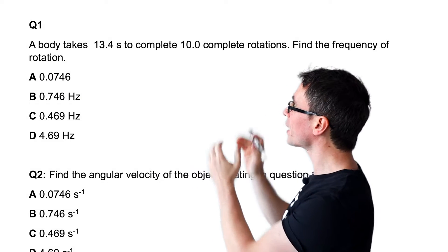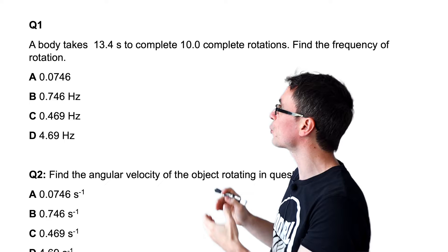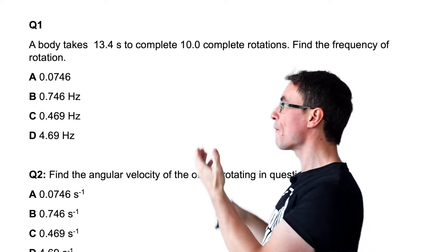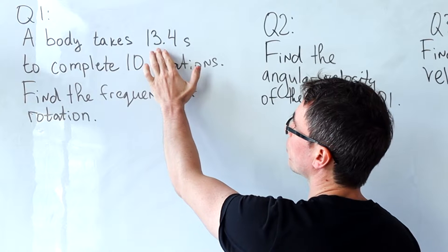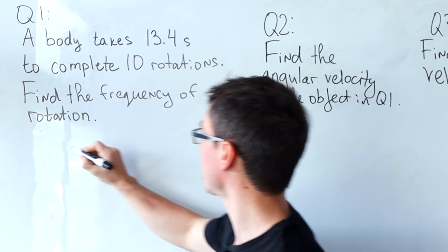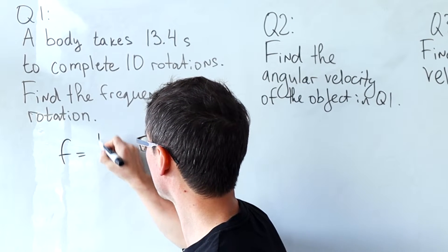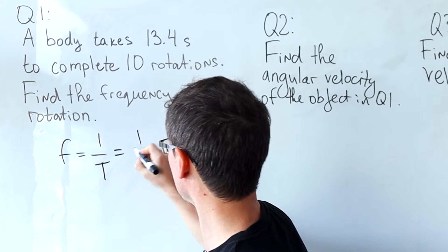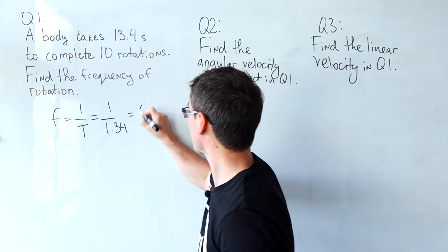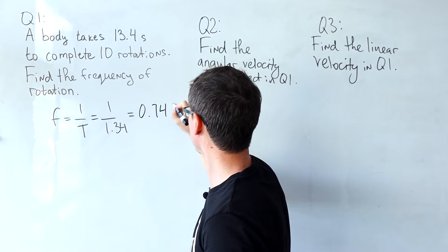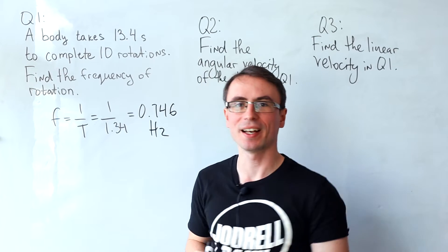Question one: a body takes 13.4 seconds to complete 10 rotations, find the frequency. We need to watch out that the actual time period will be 13.4 divided by 10, meaning that the frequency which is equal to one over the time period is going to be one over 1.34, giving us around 0.746 hertz.